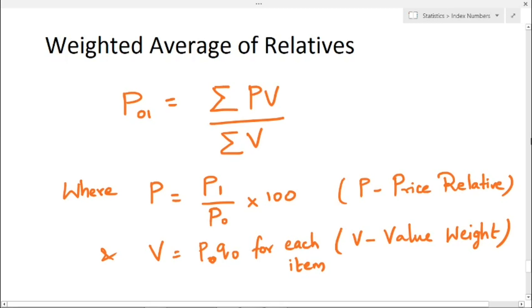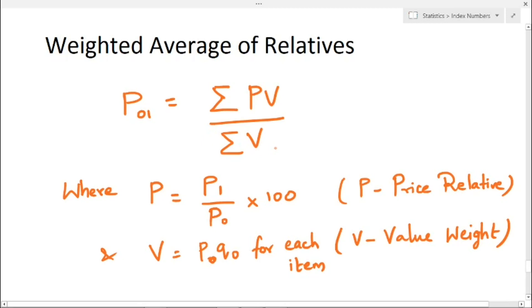First we will know the formula for weighted average of relatives. The formula is P01 equal to summation PV divided by summation V. Here P is the price relative, and the formula for price relative is P1 divided by P0 into 100. V is the value weight, and the formula for V is P0 into Q0 for each item — that is, we multiply price and quantity for each item.